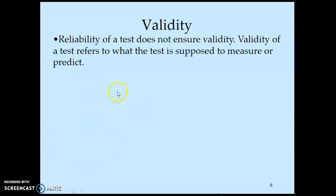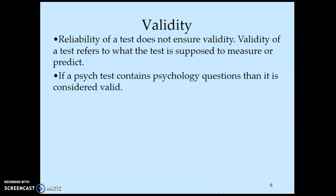The last part of test construction is validity. Just because a test is reliable doesn't mean it's valid. Validity is the test measuring what it's supposed to measure. If you're in AP Psych and I put a world history question on the test, that test is not valid. Or if you're in unit two neuroscience and I put a personality question from unit nine, that's not valid. If your teacher warns you there will be review questions, that does make it valid because they said they were measuring the review.